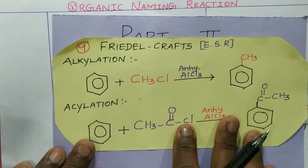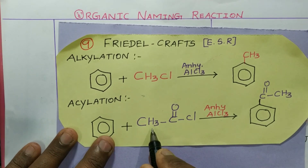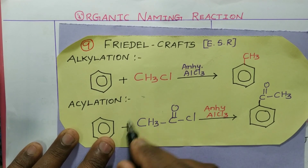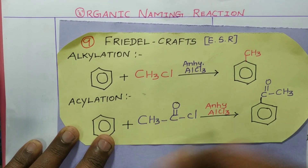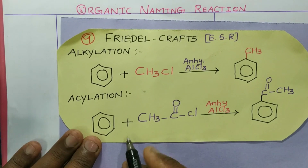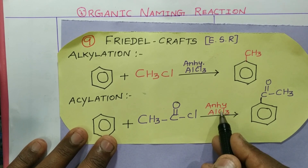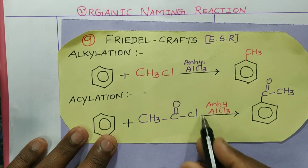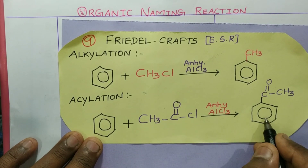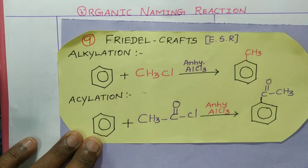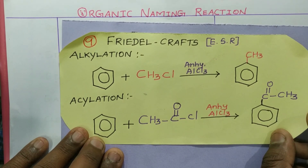The Friedel-Crafts acylation — also called acetylation — involves the same catalyst, anhydrous aluminium chloride. The catalyst reacts with one of the reactants to form the respective electrophile. That electrophile then approaches the benzene ring, giving the acylated product. This is the Friedel-Crafts acylation reaction.